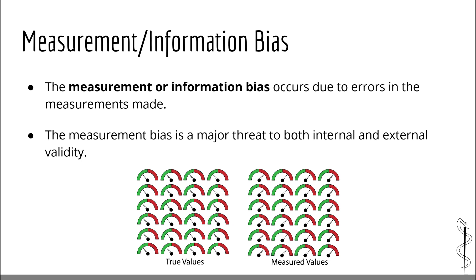What is the measurement bias? The measurement bias, or information bias, occurs due to errors in the measurements made, and is a major threat to both internal and external validity. At the heart of every health research project are two major components: the population or study sample, and the measurement or recordings. The selection bias involves errors in the sample population, whereas the information bias involves errors in the way the information is collected. For example, you can have a study population representative of the target population — low risk of selection bias — but if you cannot correctly measure the variables of interest, your study will suffer from measurement bias. Therefore, it is possible to have low risk of selection bias yet high risk of information bias.